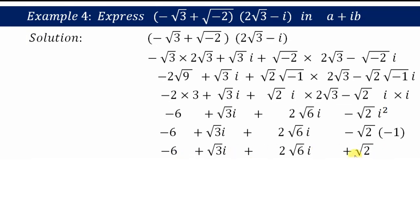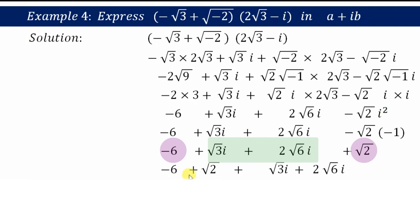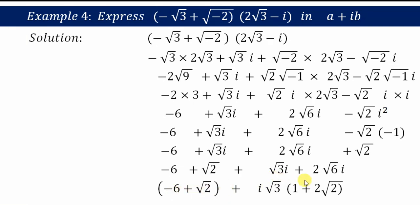Now you can see there are all unlike terms, so we group the non-i terms together — that is, -6 and +√2 — and group the i-terms together — that is, √3·i and 2√6·i. This gives (-6 + √2) + (√3 + 2√6)i. Taking i as common from the i-terms, and noting that 2√6 = 2√3·√2, we can factor out √3, giving √3(1 + 2√2).